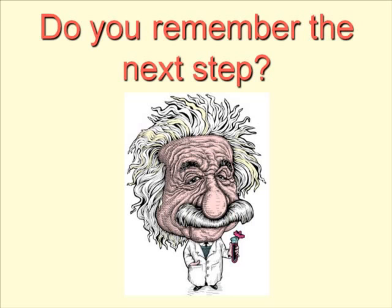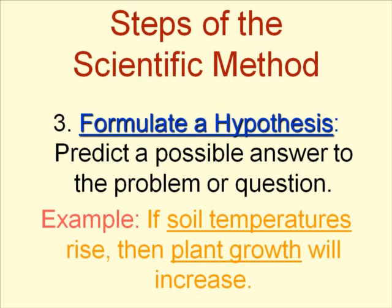The next step is to formulate a hypothesis — a prediction or answer to your problem or question. After doing background research, you need to have an idea of what your results are going to be. For example: 'If soil temperatures rise, then plant growth will increase.' If you've done step two, you'll have researched the effects of soil temperature on plant growth. You might even find that someone else has done it with geraniums, testing growth at different soil temperatures. Based on that, you could do it with cactuses or dandelions and have an idea of what temperature might be optimal for plant growth.